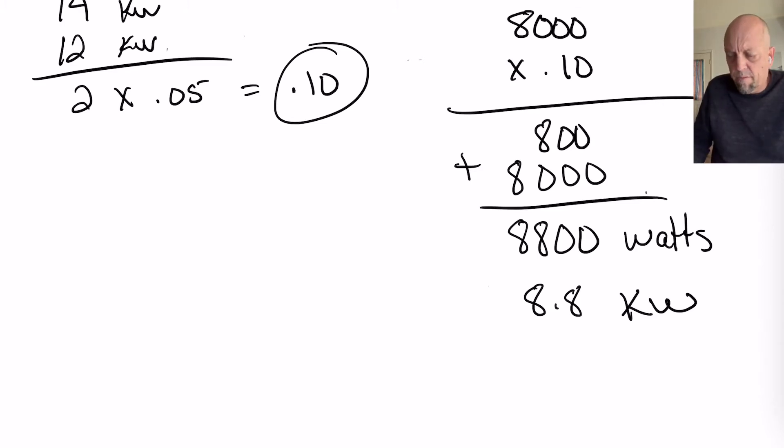Remember when you're converting from kW to watts or watts to kW, we're taking that decimal point, moving it three places to the right or three places to the left, depending on how you want to change it. So, down here for watts, we move up one, two, and three. So, that will take that from watts to kilowatts, 8.8 kW.